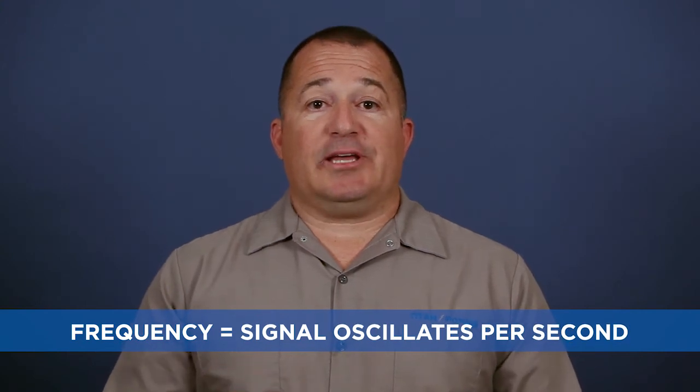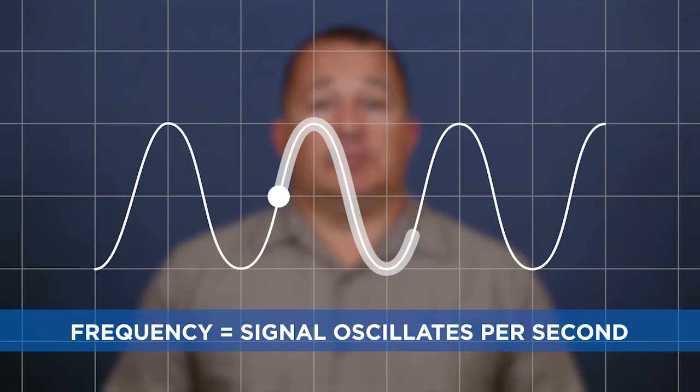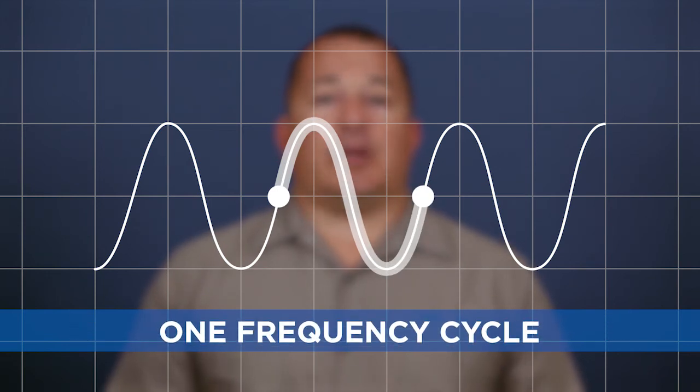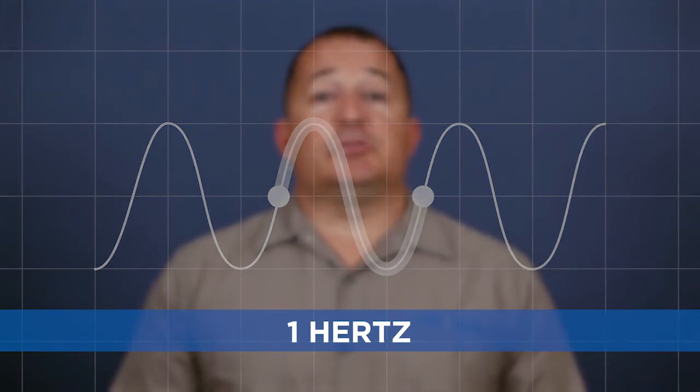Frequency is the number of times an electrical signal oscillates per second. From this point to this is one frequency cycle, or Hertz. Most electrical equipment operates at 60 Hertz.